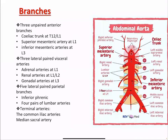The abdominal aorta has multiple branches, both anterior and lateral. There are three anterior unpaired branches: the celiac trunk at the level of T12–L1, the superior mesenteric artery at the level of L1, and the inferior mesenteric artery at the level of L3.